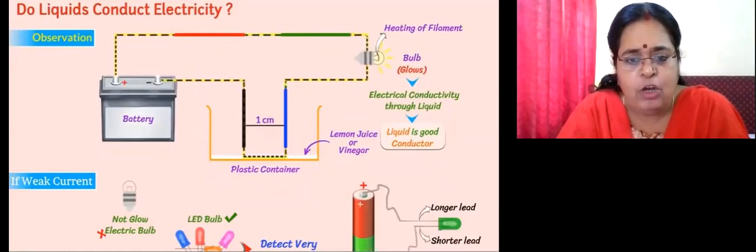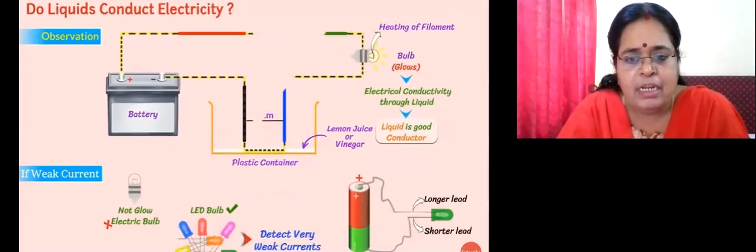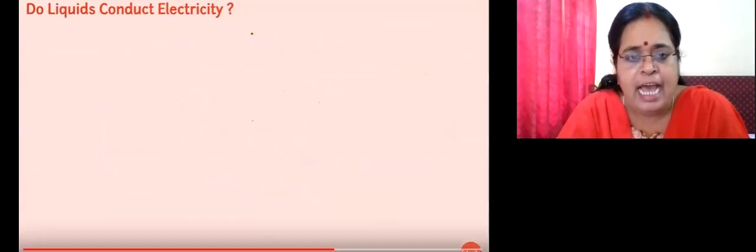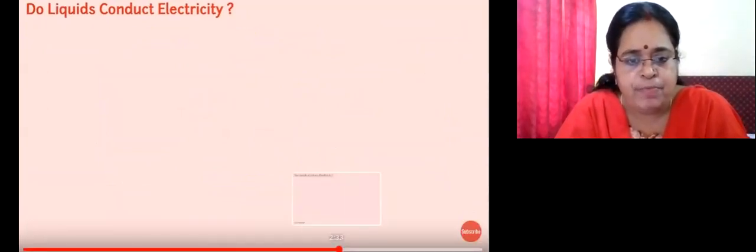As you can see on the screen, there is a picture of a cell where the longer lead and the shorter leads are shown. That is just for your information.